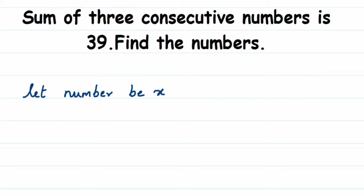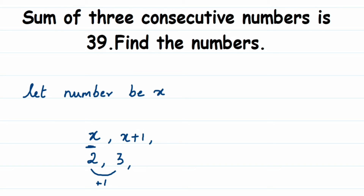Suppose the first number is x. Then what will be the second and third number? Let me take an example: 2, 3, and 4. If my first number is 2, the second consecutive number will be 3. So I added 1 to get the next number. If x is my first number, the second number will be x plus one. Similarly, my third consecutive number will be 4.